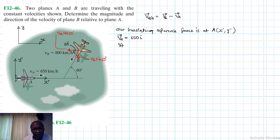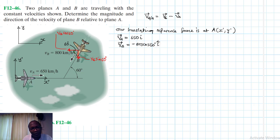VB has two components. VB equals 800, so we have negative 800 cosine 60 in the i-direction and negative 800 sine 60 in the j-direction.